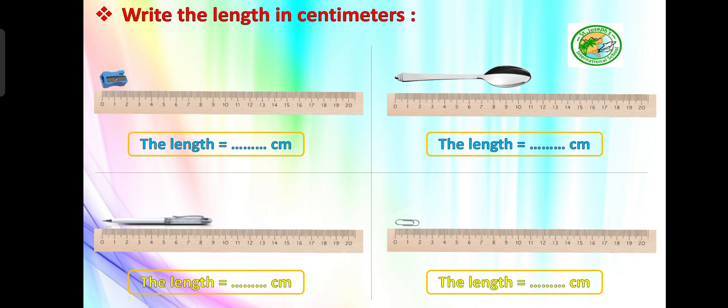Put your sharpener on your ruler and find the length of the sharpener. This is just from the picture — your own sharpener may be greater than or smaller than this one. From the picture, the length of the sharpener equals two centimeters, from zero to two.